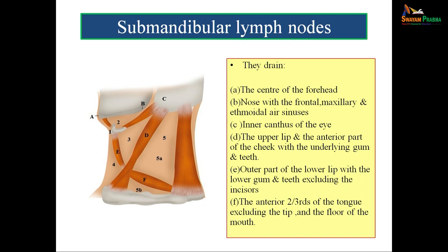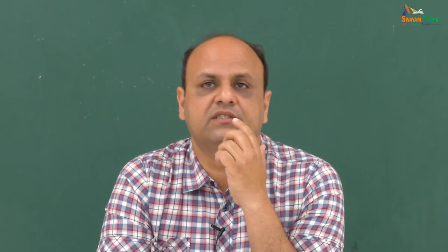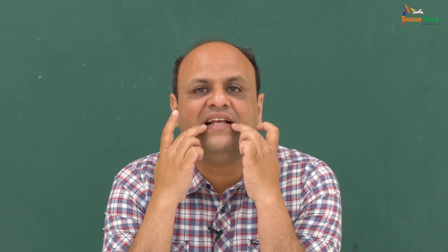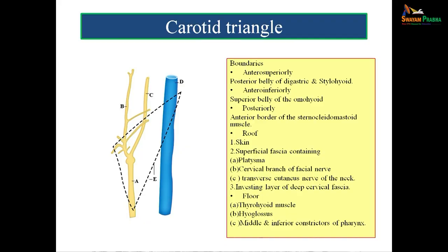Submandibular lymph nodes constitute an important component of the digastric triangle. Their area of distribution includes: the center of the forehead; the nose and associated sinuses (frontal, maxillary, ethmoidal); the inner canthus of the eye; the upper lip; anterior part of the cheek; underlying gum and teeth; outer part of the lower lip and teeth excluding incisors; and the anterior two-thirds of the tongue excluding the tip, which is drained by submental lymph nodes.